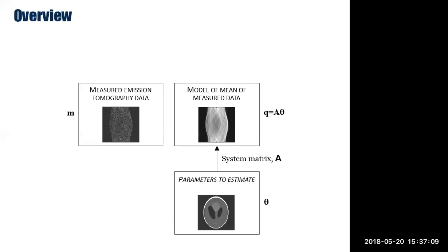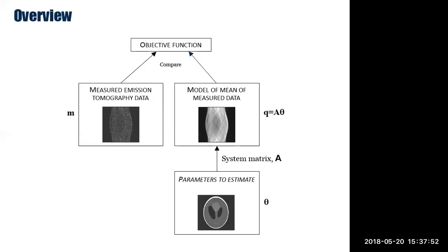In most reconstruction methods, we have an objective function which compares your model of the mean data with your noisy measured data. Similar to linear regression, where your model of the mean is your best-fit line and your noisy data are the scattered points. In PET, we use a Poisson noise model and look at a different objective function — maximum likelihood — which we'll get onto in the next few slides. The objective function compares your model of the mean to see how well it agrees with the actual noisy measured data M.